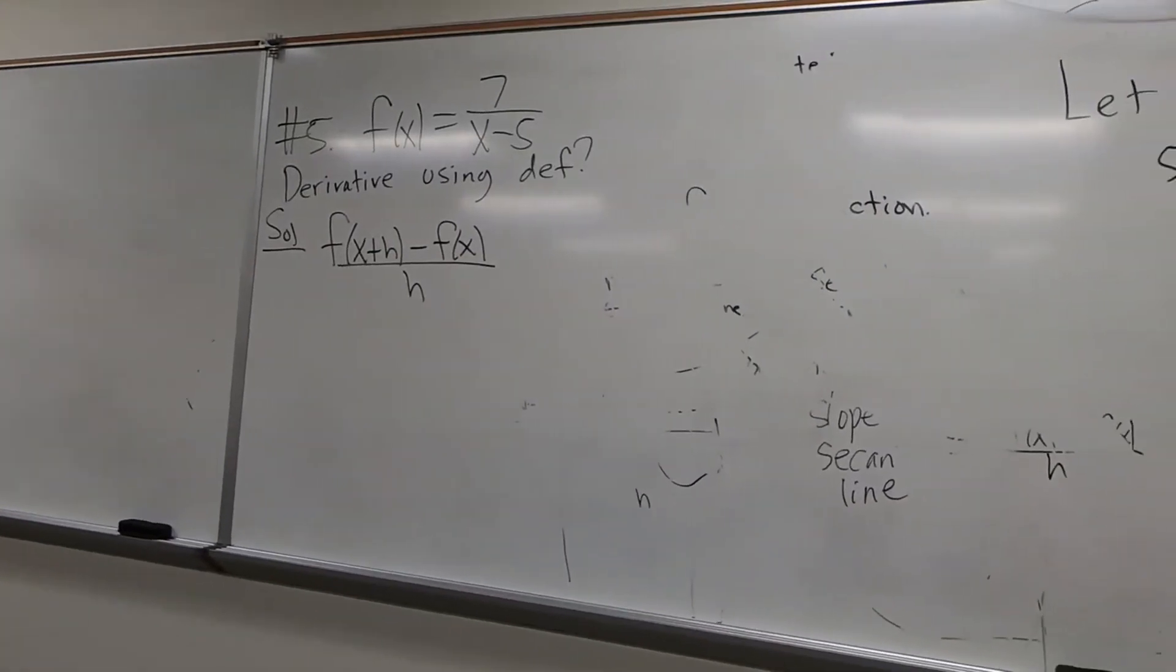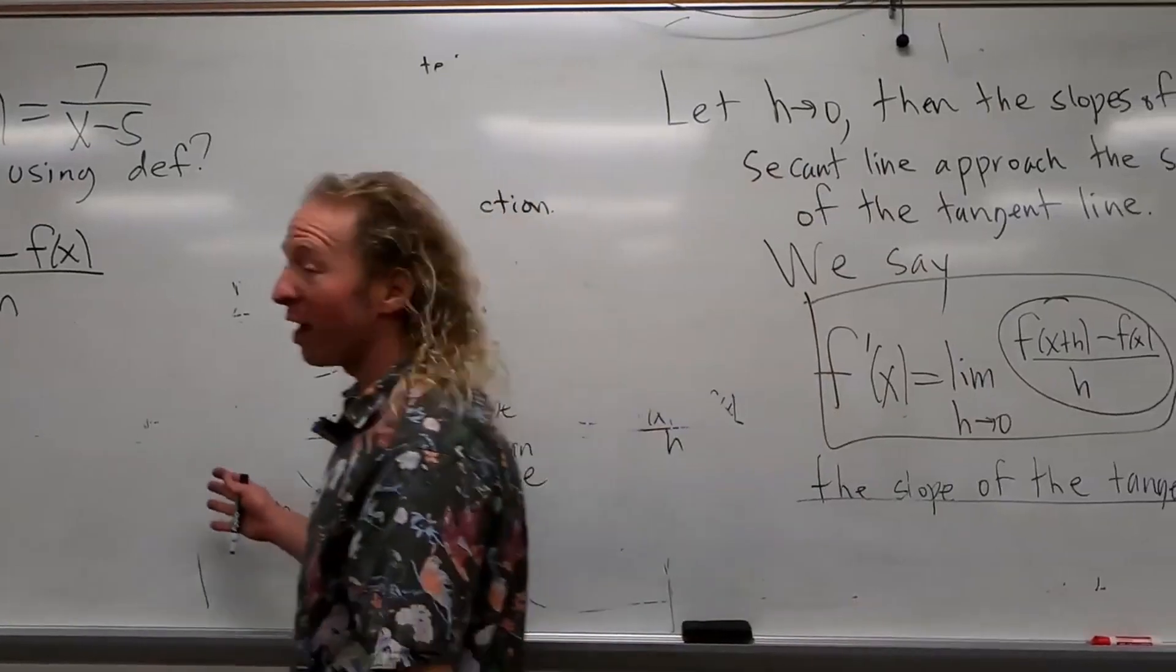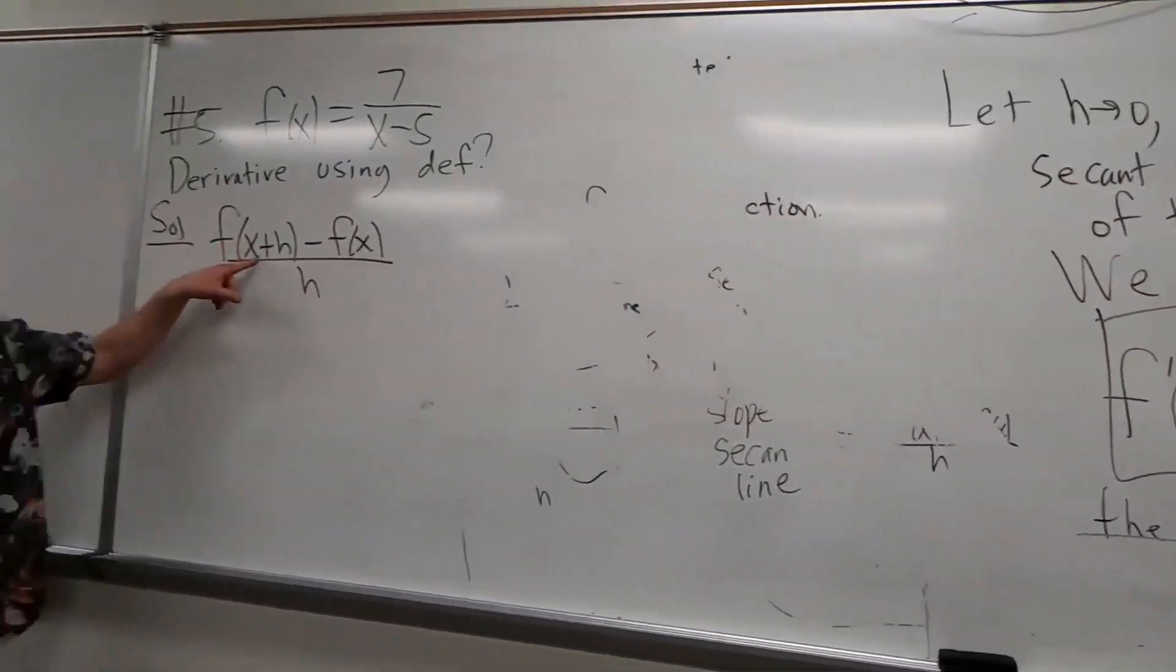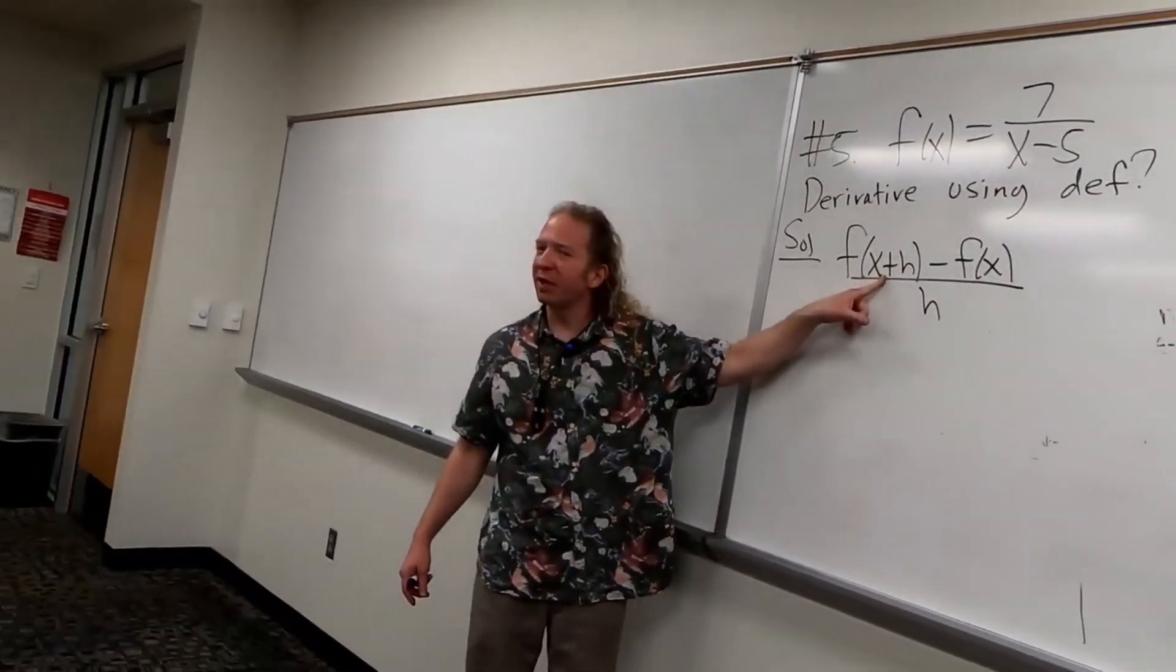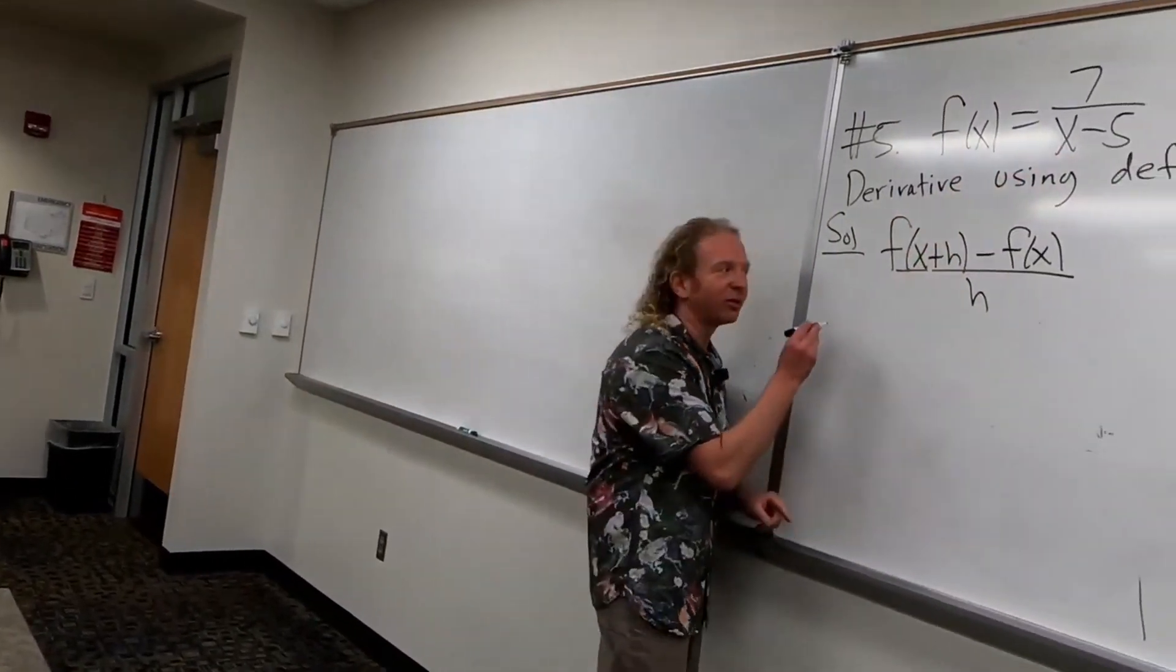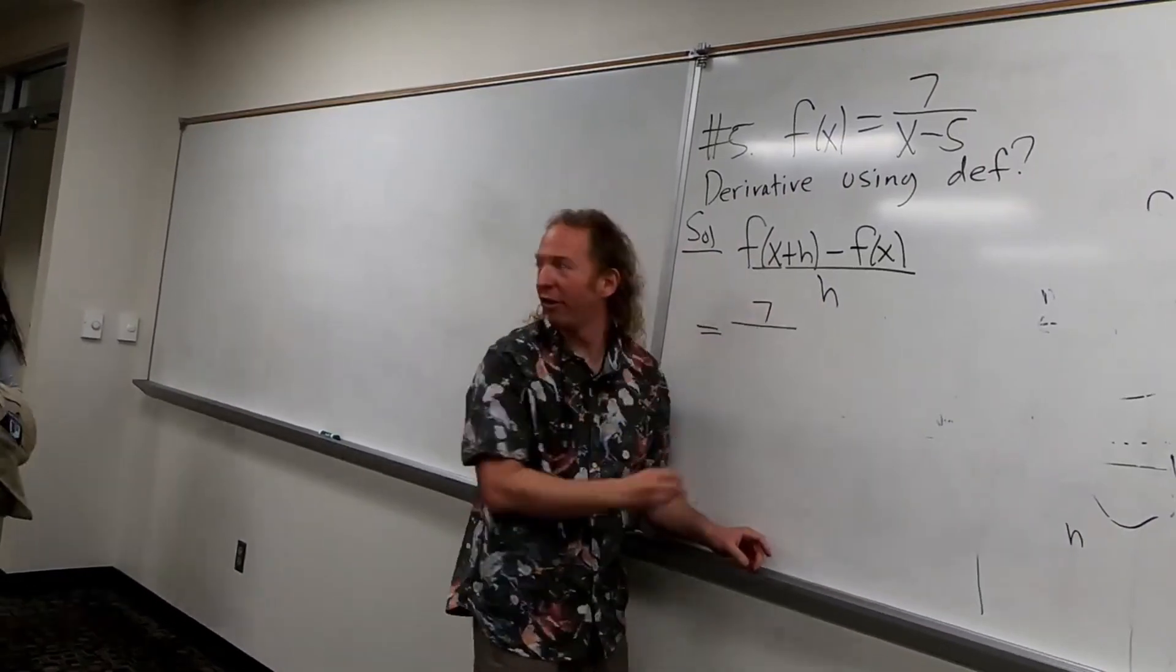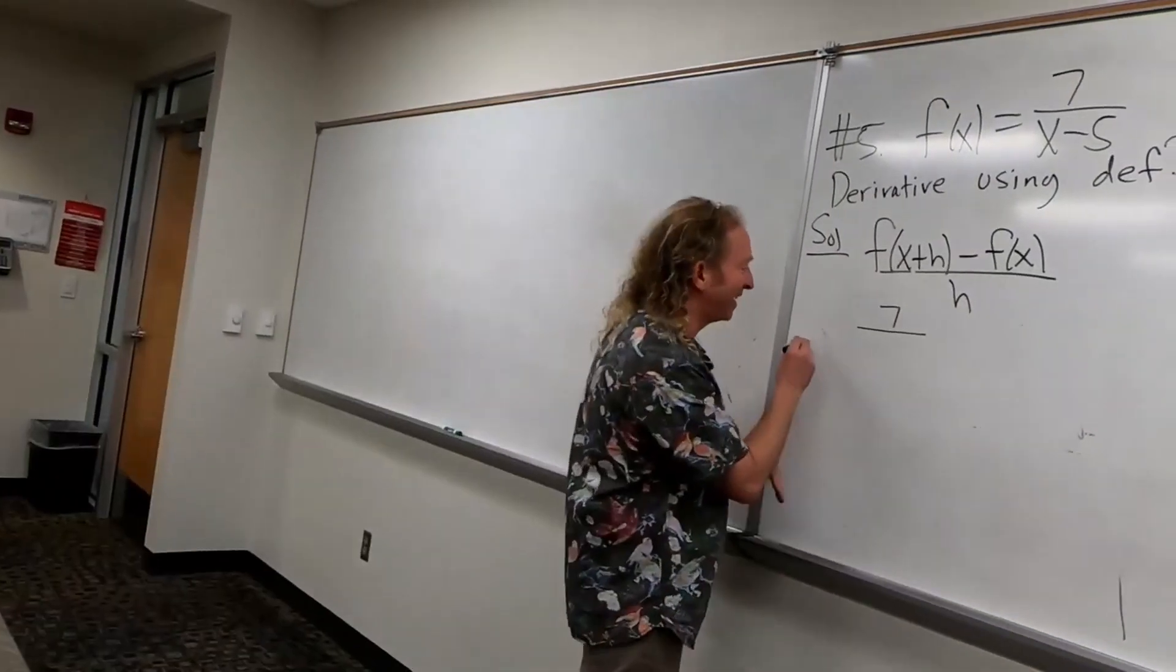That's a good first step. Okay, so now we just replace this. This means you put x plus h's where all the x's are. This is going to be equal to seven over... Made it. This is the first example, so it's good.